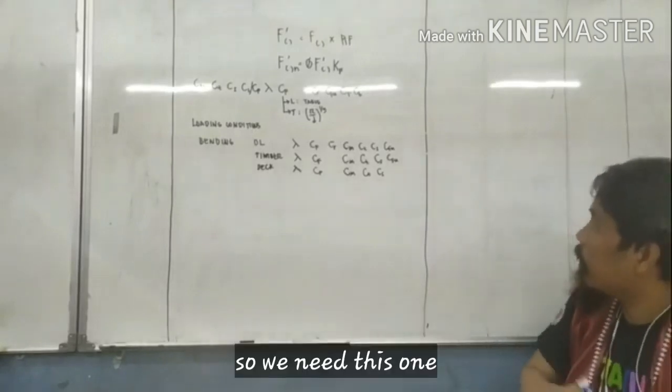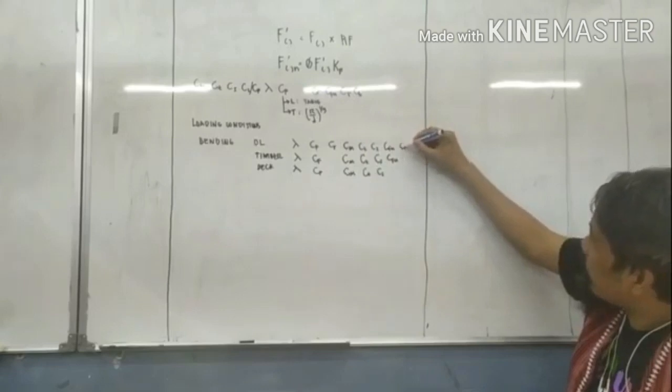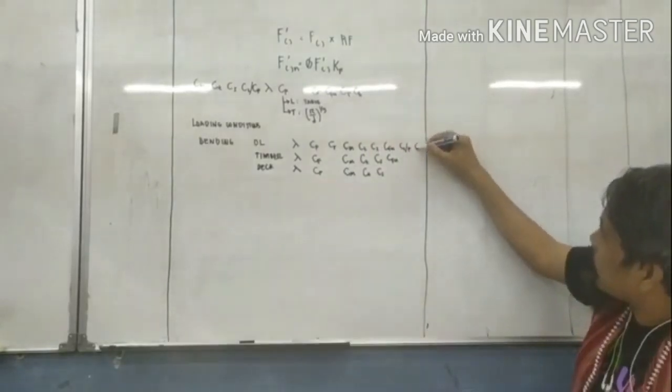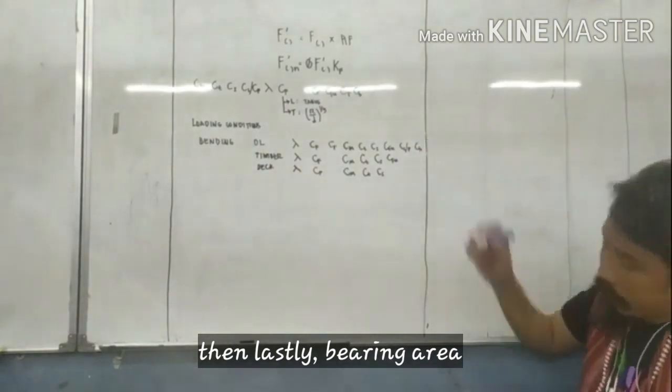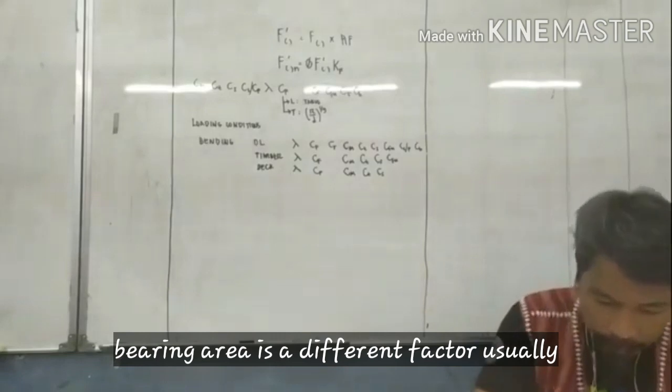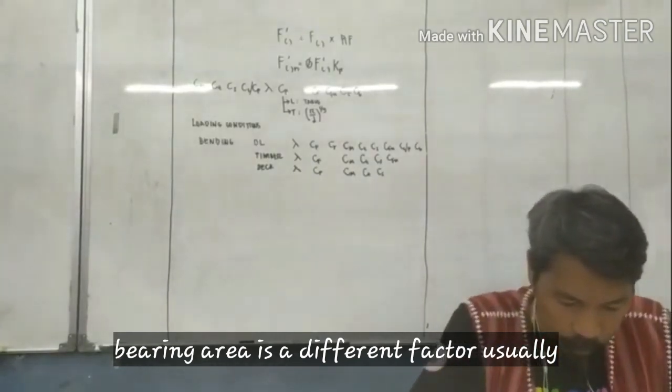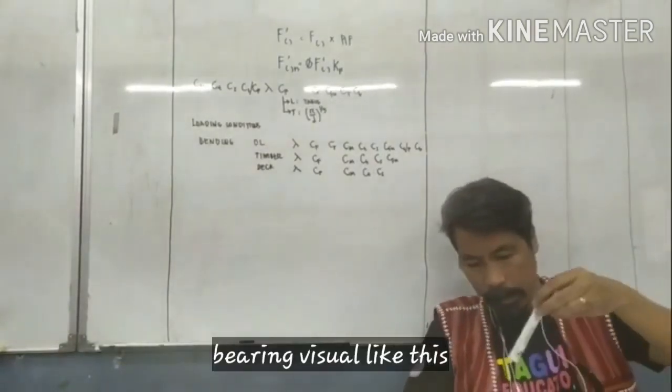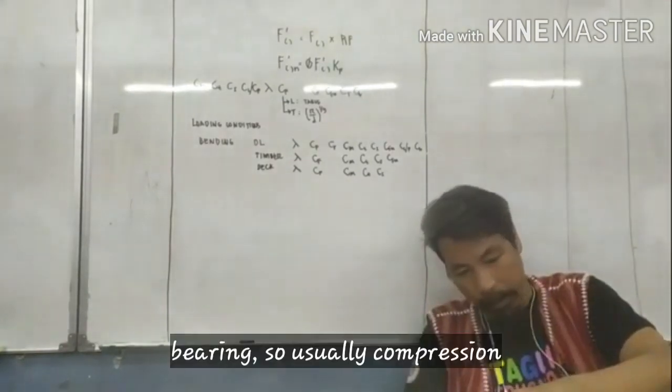So we need what? Build stability, call of stability. Then buried area. Buried area is a different factor. So usually buried, like this, buried.